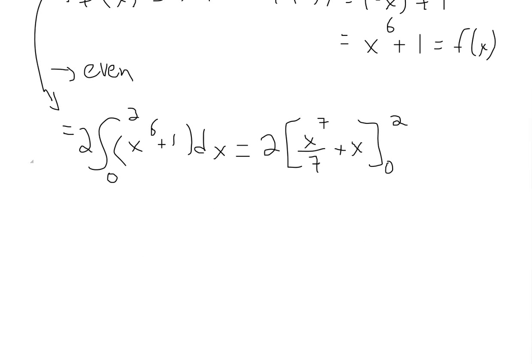So now we could go ahead and plug these in. So we'll get basically 2 times 2 to the power of 7 divided by 7, then plus 2. And then we have to subtract 0 to the power of 7 divided by 7 plus 0. This is just minusing 0, everything is 0 there when we plug in this. So this way we simplify this greatly instead of having to put in negative 2 inside.